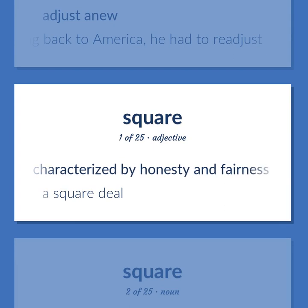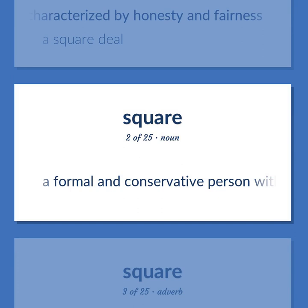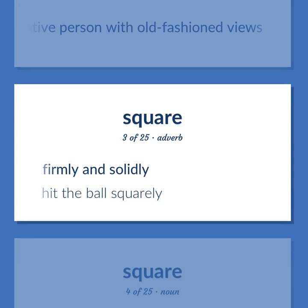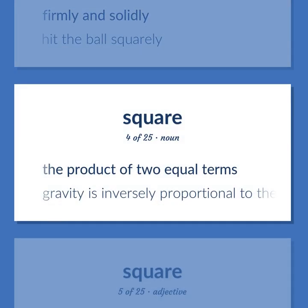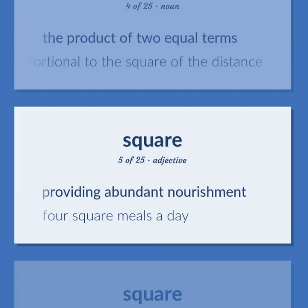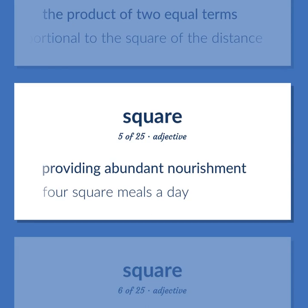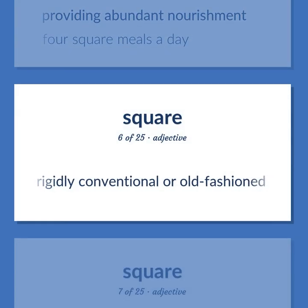Square: characterized by honesty and fairness — a square deal. A formal and conservative person with old-fashioned views. Firmly and solidly — hit the ball squarely. The product of two equal terms — gravity is inversely proportional to the square of the distance. Providing abundant nourishment — four square meals a day. Rigidly conventional or old-fashioned.